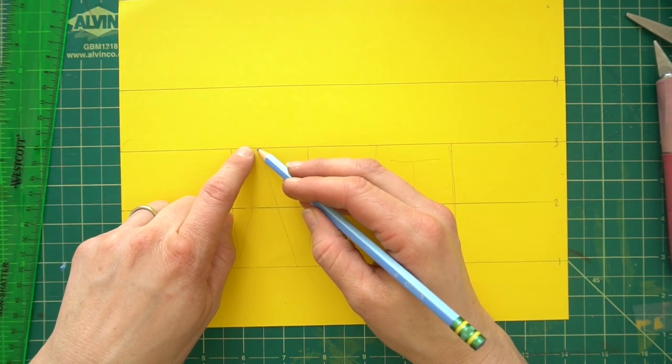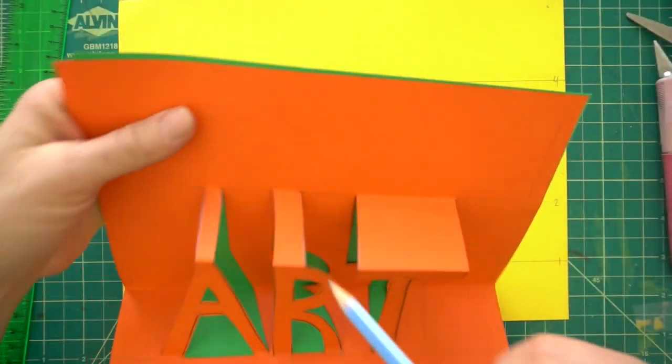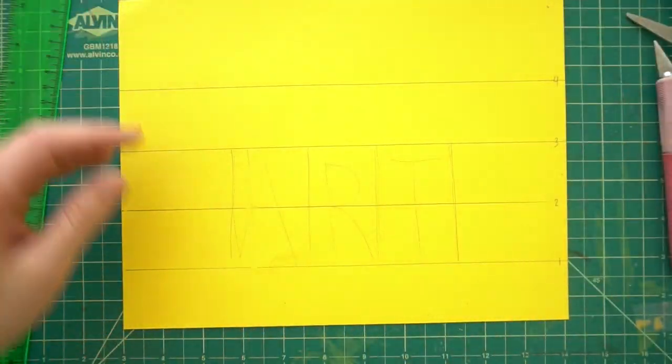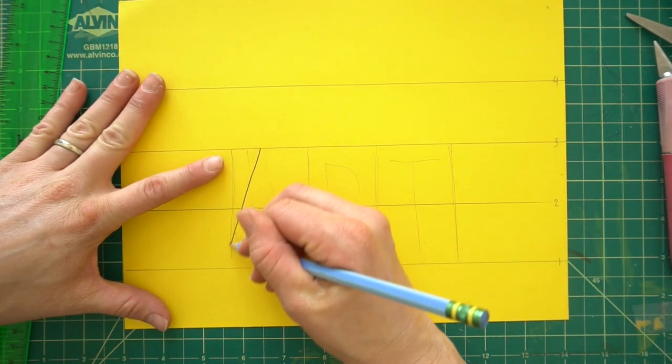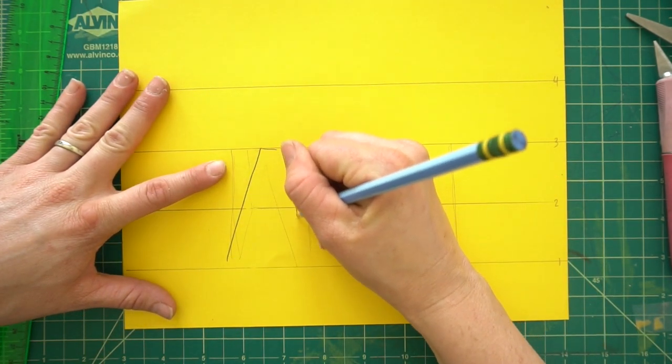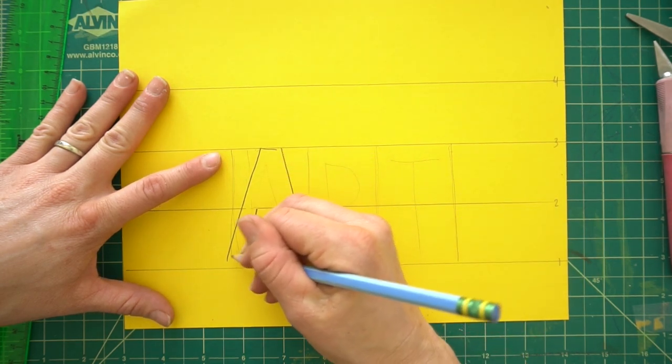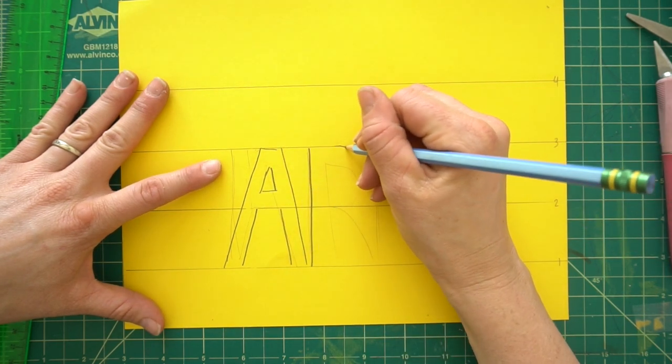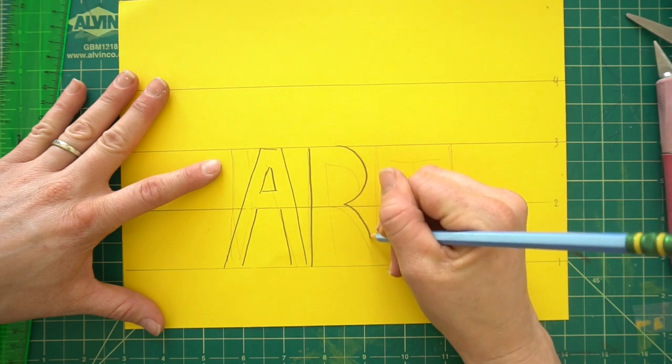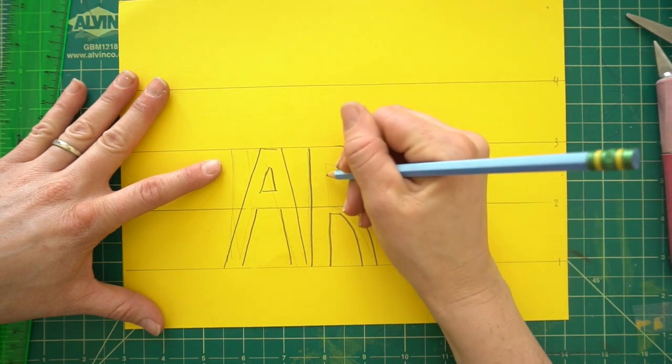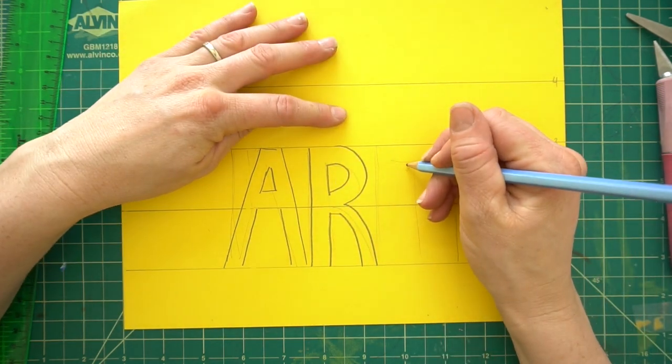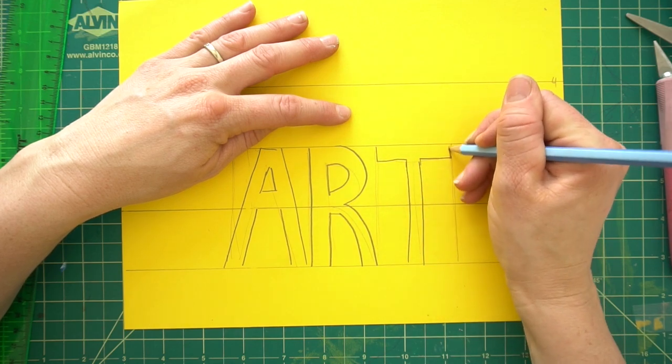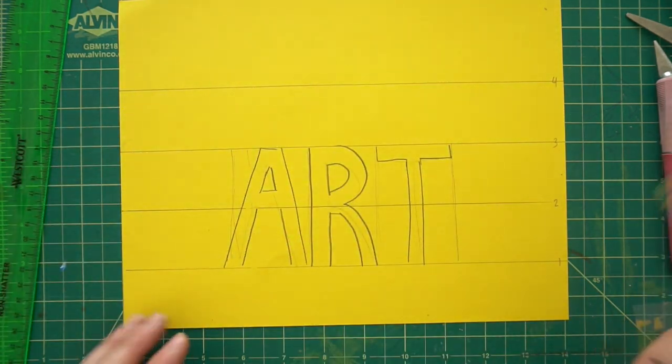And now I'm going to block them in with some big dark lines. Also, make sure they attach to this line. Look at this R. Do you see how I attached it? So make sure your letters touch that line because it's important to help it fold out. My T is a little bit Gumby-like and that's okay.